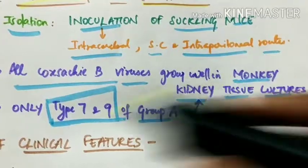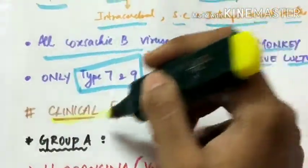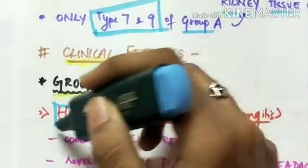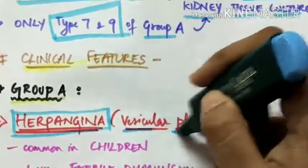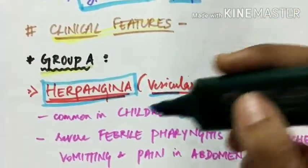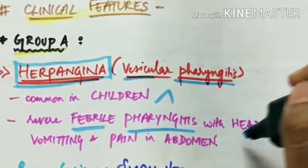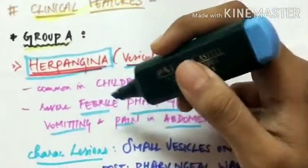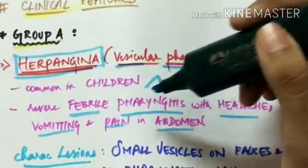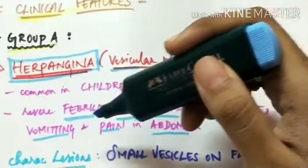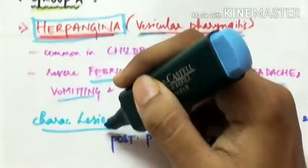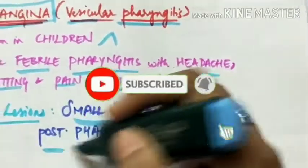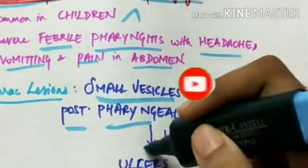Clinical features produced by group A Coxsackie viruses: First is herpangina, also called vesicular pharyngitis. This is common in children and presents with severe febrile pharyngitis with headache, vomiting, and abdominal pain. The characteristic lesions are small vesicles on the fossa and posterior pharyngeal wall which break to form ulcers.